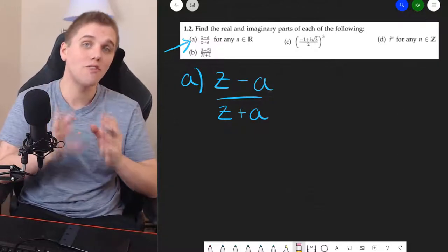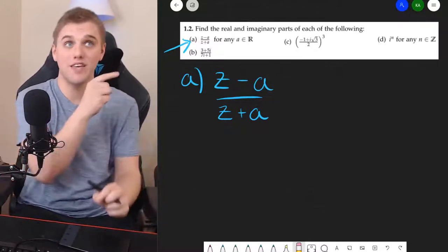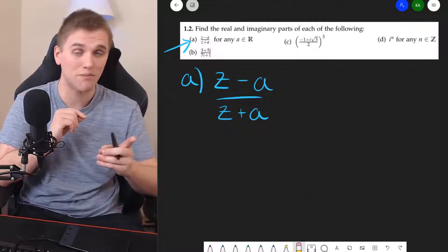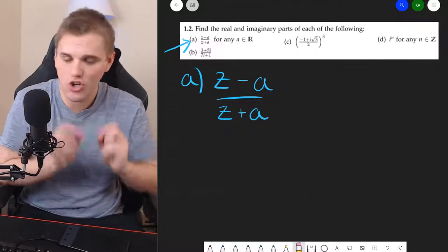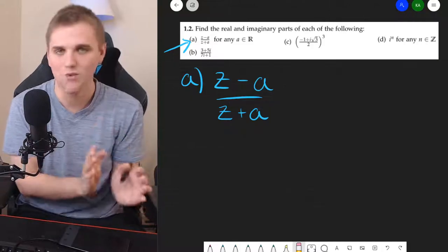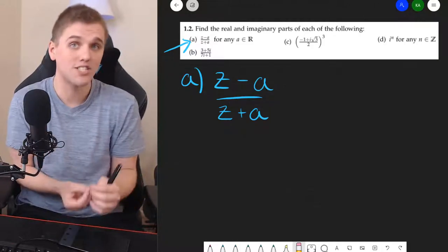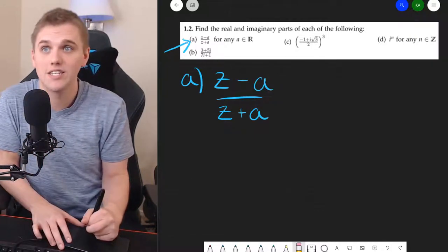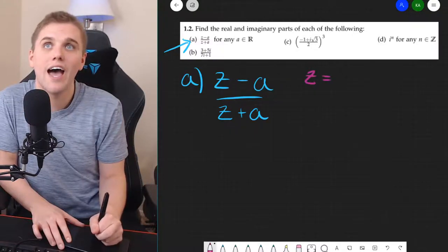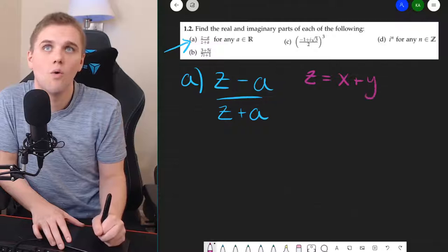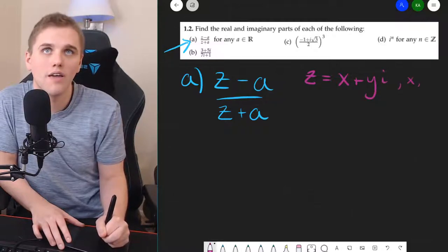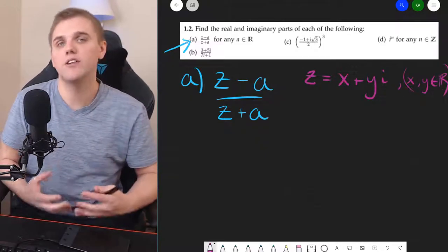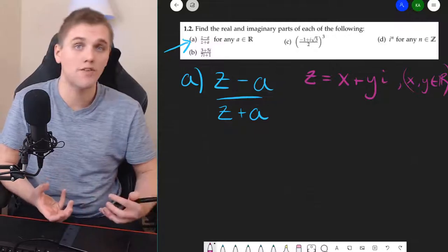So to solve this problem, to find the real and imaginary components of part A, Z minus A divided by Z plus A, where A is a real number and Z is a complex number, a good first go-to strategy that I highly recommend is to write all of your complex numbers in terms of its real and imaginary parts. So I'm going to write Z as X plus YI, where X and Y are real numbers. And so now I clearly see what part of Z is real and what part of Z is imaginary.